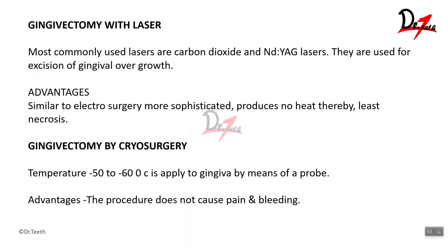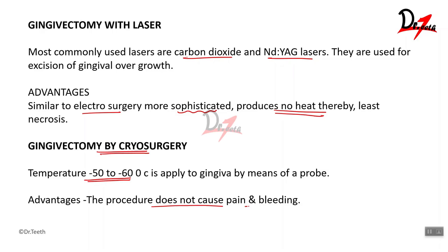Laser gingivectomy uses lasers such as the carbon dioxide laser and the Nd:YAG laser to excise gingival overgrowths. Compared to electrosurgical techniques, lasers are more sophisticated and produce less heat — hardly any heat — thereby decreasing tissue necrosis. Cryosurgery applies extremely low temperatures, minus 50 to minus 60 degrees Celsius, to the gingiva with probes, causing gingival degeneration and excision. The advantage of cryosurgery is that it causes no pain or bleeding.